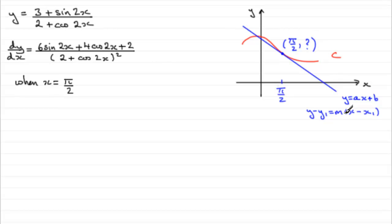And also, m is the gradient of our tangent, which is the same as the gradient at this point on the curve, where x is π/2. So we can get that part from dy/dx. So what we really need to do then is, first of all, let's find out what y is.